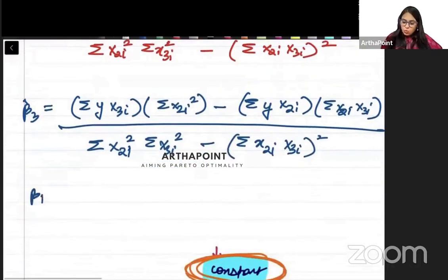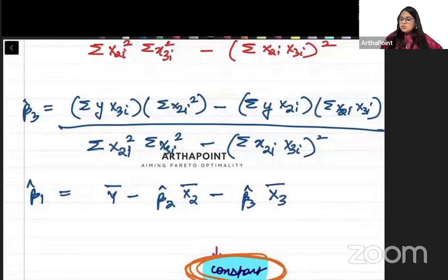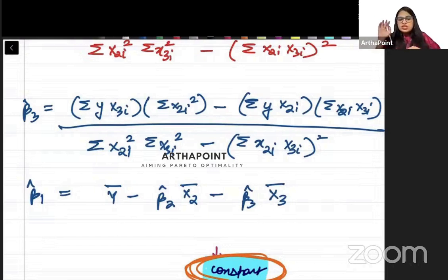And beta 1 hat will be y bar minus beta 2 hat times x2 bar minus beta 3 hat times x3 bar. This is how you can go ahead and measure these three coefficients. So in a multi-variable regression model, your coefficient formulas become these, and in a single variable regression model, your coefficient formulas are the ones we wrote earlier.